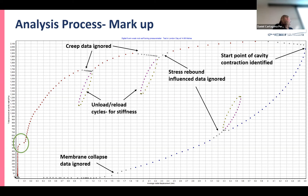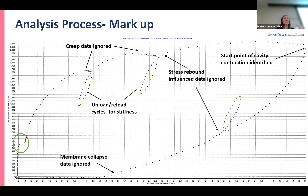We also identify any weirdness - that initial bit at the start of the test that shouldn't happen. Keeping that in the back of your mind to think about what's causing it - on this project we were about three meters from the toe of a really large retaining wall, and that's what caused this jump.